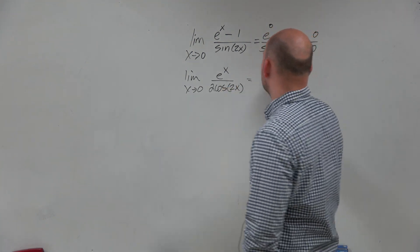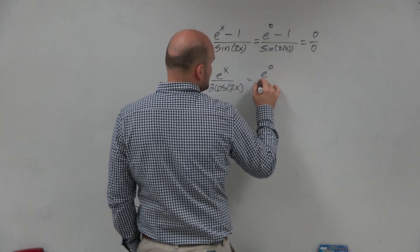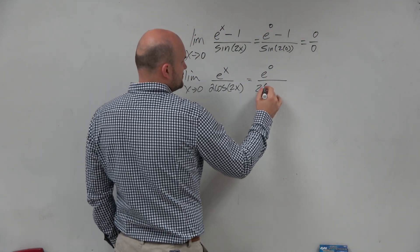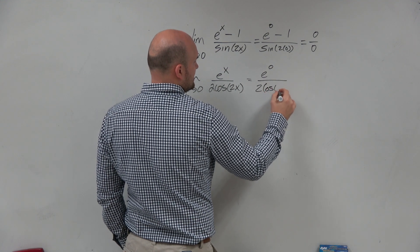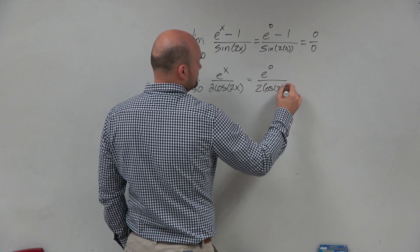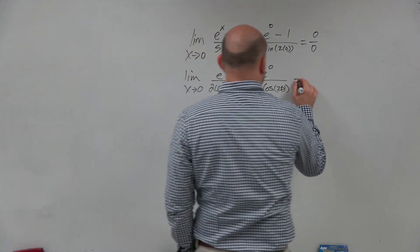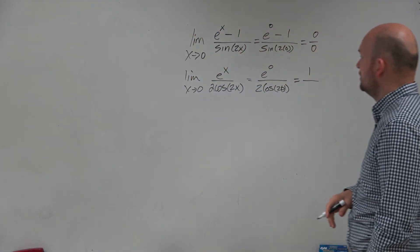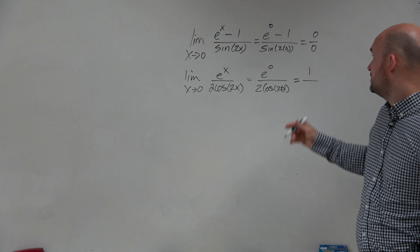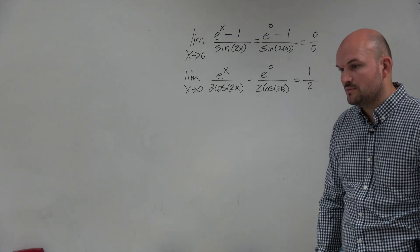So therefore, we can apply direct substitution here. So that's e to the 0 over 2 times cosine of 2 times 0. And e to the 0 is going to equal 1. Cosine of 0 is 1. So that's 1 over 2. So 1 half.